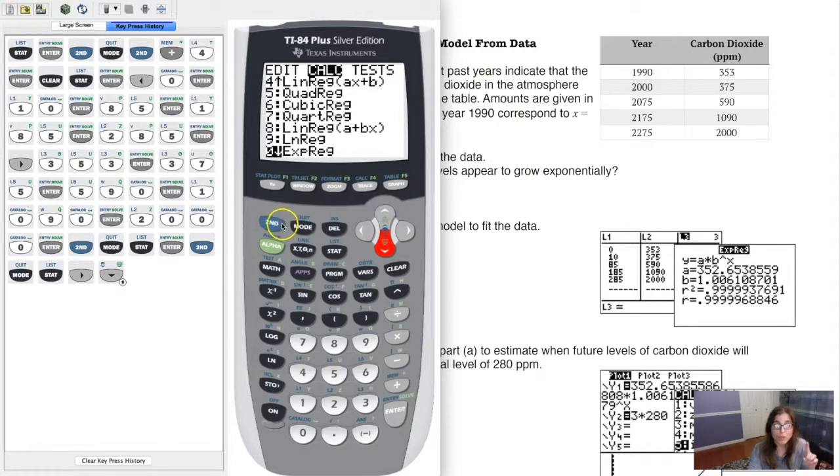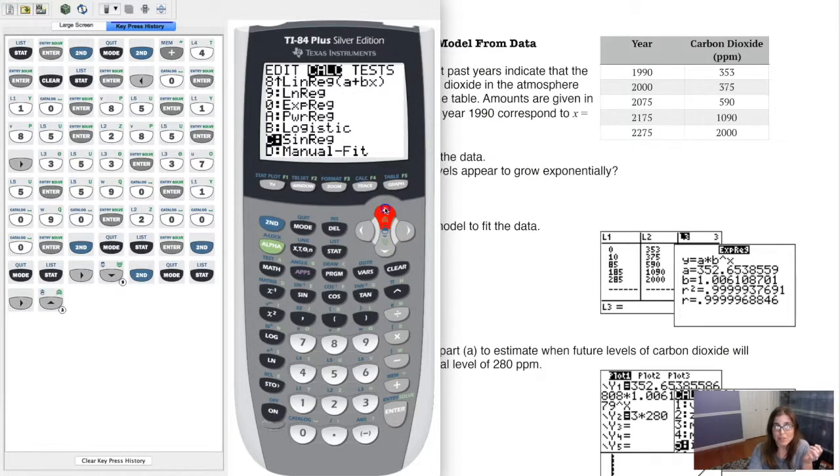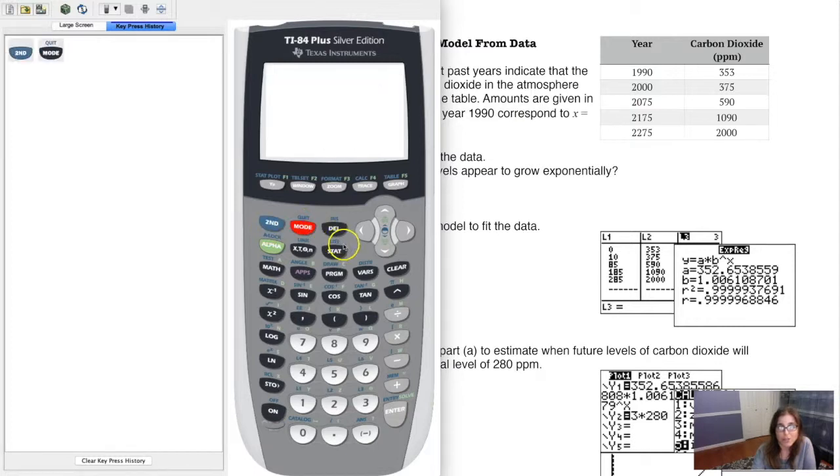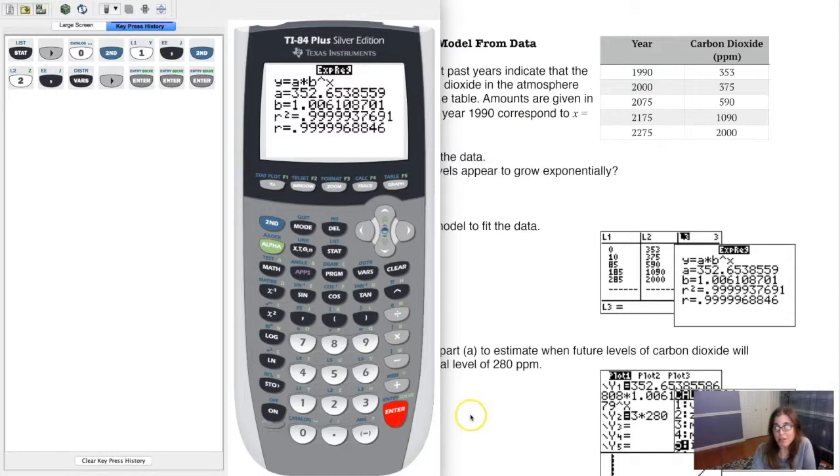I'm going to clear my lists out. I hit second and the plus sign, option four, and clear them all out. Let's go back in and do some data entry. If you're not remembering how to get into your list, it's stat enter. Whenever we come to these data problems, anything with the word stats in it, you're going to be using stat, second one for stat plot, zoom nine for zoom stat.